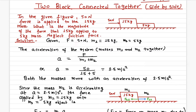The given values are: total force applied is 50 newtons, mass of the first object is 15 kilograms, and mass of the second is 5 kilograms. When the two masses are connected together and a force is applied, both masses move together with the same acceleration. So let's find the acceleration of the system — the two masses together.